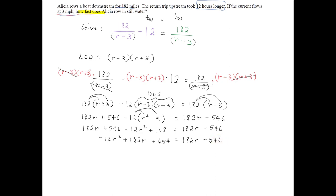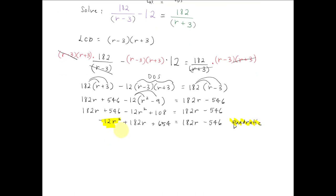Let's rewrite this left side as negative 12r squared plus 182r plus 108 plus 546, which is 654, equal to 182r minus 546. Right away we notice the term with the r squared. So this means this is a quadratic equation and we have to solve by factoring. And the first step is to get 0 all on one side.